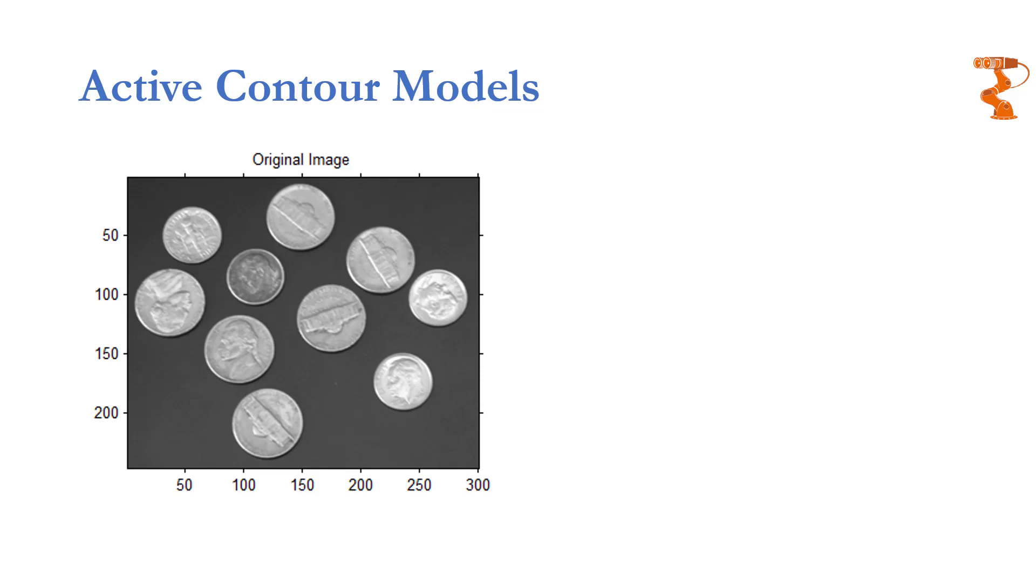This image which you are seeing is quite a famous image, it is a coins image. So what if we want to find all the edges present in this image, and using those edges we want to segment out the objects? If a snake starts it will try to settle down at the edges present in the image.